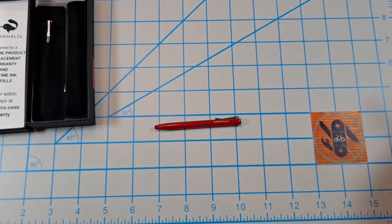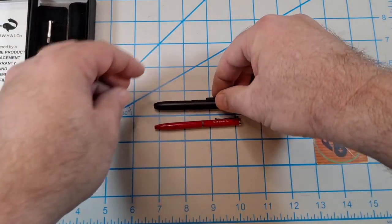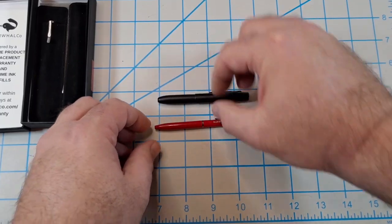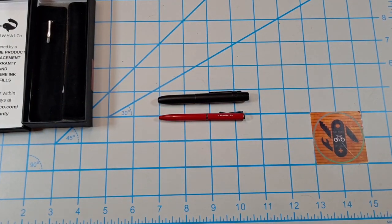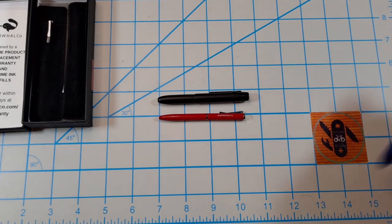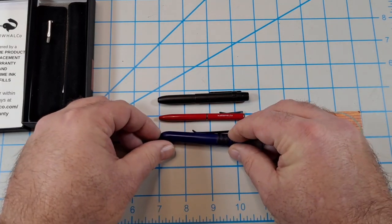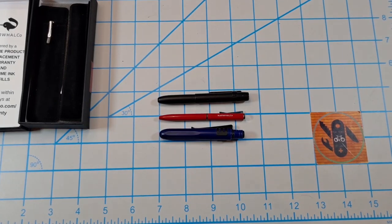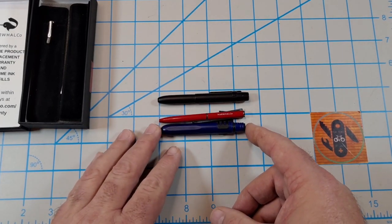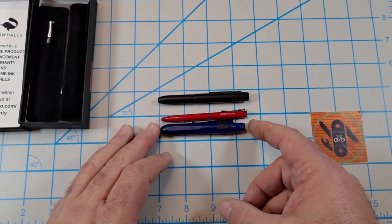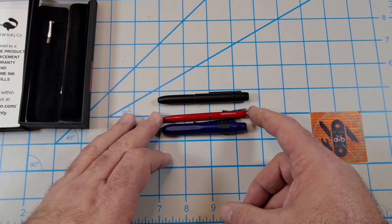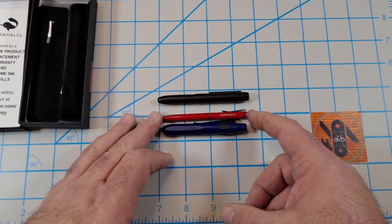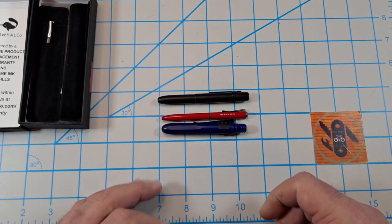Let me compare it a little bit. Here's a Fisher Space Pen Bullet. You can see it's actually shorter and thinner than a Space Pen Bullet. Here's a pocket pen, and they're about the same length. Maybe the Narwhal is a touch longer, but you can definitely see the size difference in diameter.